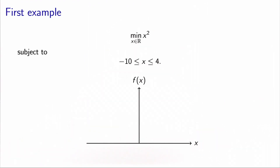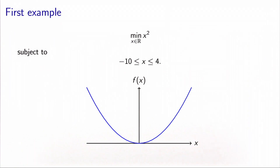In order to illustrate the concept of active constraints, let's take an example. Here I would like to minimize the function x squared under the constraints that x must lie between minus 10 and 4. The first constraint is represented at minus 10, and the second constraint is represented at 4.